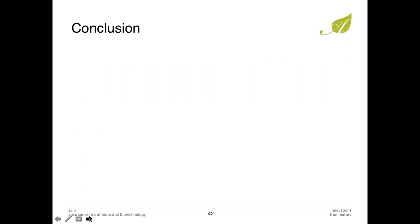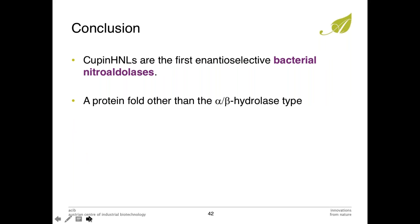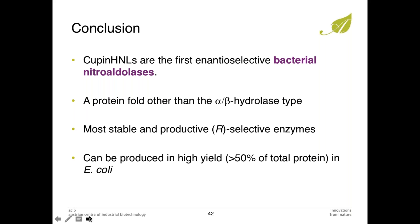In conclusion for this part: we found the first bacterial nitro aldolase, which is also the first that is not of the alpha-beta hydrolase type. It is the most stable and most productive R-selective enzyme for this reaction, can produce product in high yield, and was patented. We have some other strategies now for improving diastereoselectivity and will see what comes out in a few years.